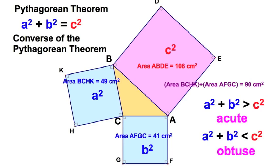So, there you have it. If a² + b² equals c², we have a right triangle. If it's greater than c², acute. Less than c², obtuse.